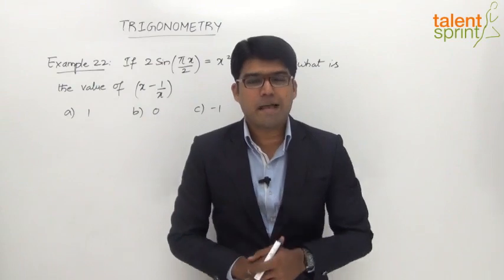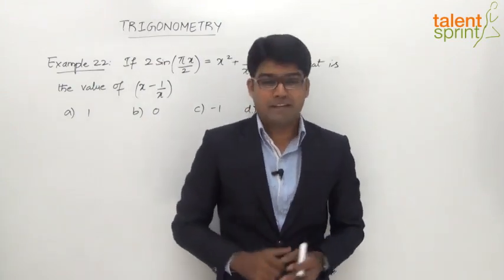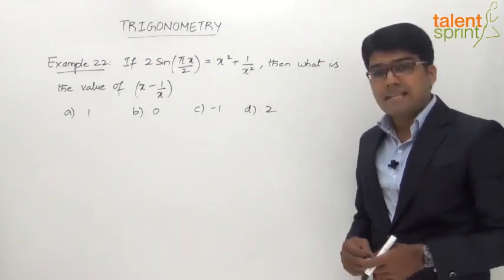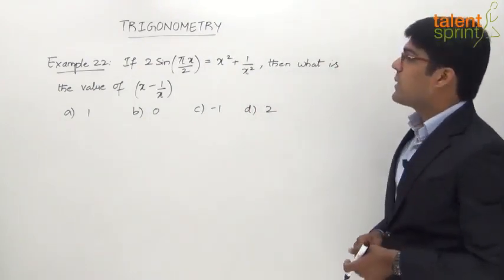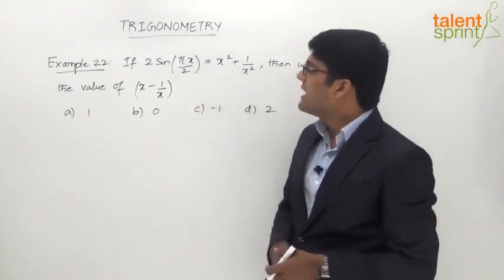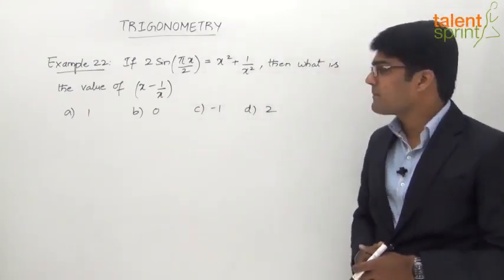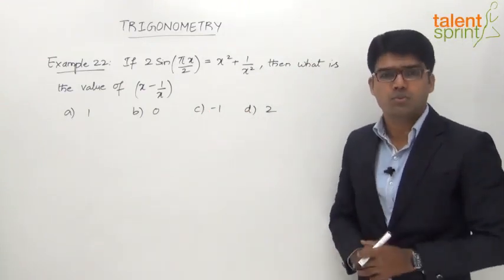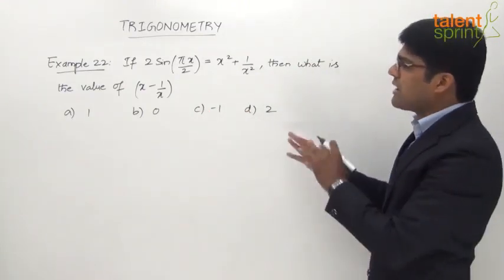And we are now at the last example from this topic of trigonometry. Let's look at what the question is. If 2 sin(πx/2) = x² + 1/x², then what is the value of (x - 1/x)? The given answer options are 1, 0, -1, and 2.